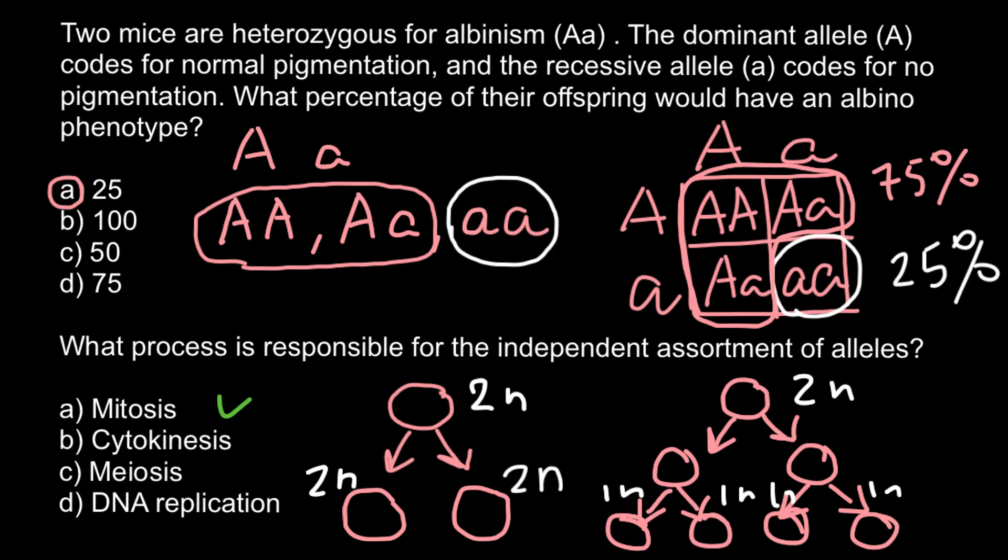In meiosis, we start with one diploid cell and the result of division is four daughter cells that are genetically different from the mother cell. We call such cells gametes, and these gametes are haploid. As you see, independent assortment happens during meiosis.